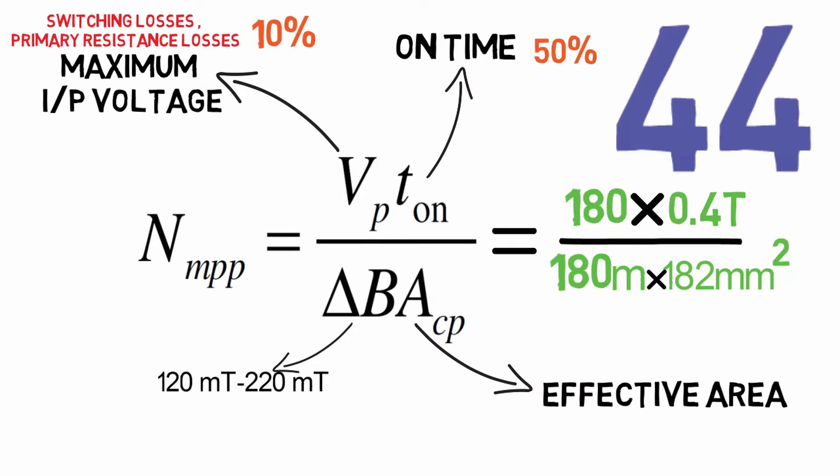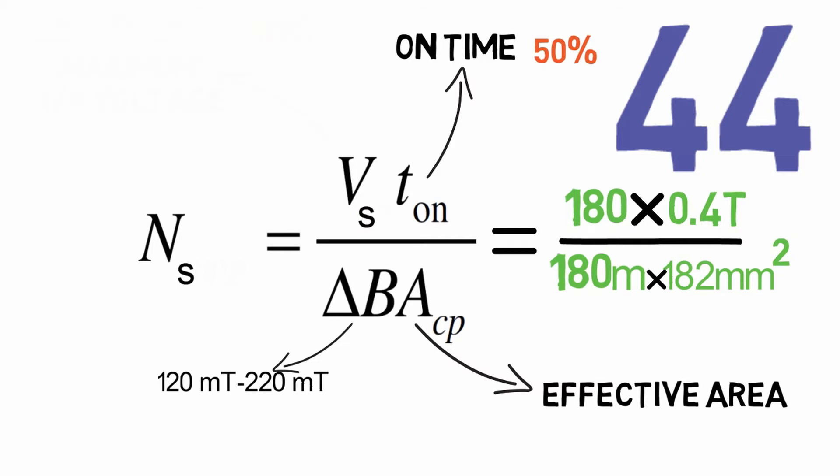By solving this equation we get the number of primary turns as 44 at one side and same for another side. For the secondary turns, Ns is equal to secondary voltage into Ton time upon effective area into delta B. First we need to calculate the secondary voltage.